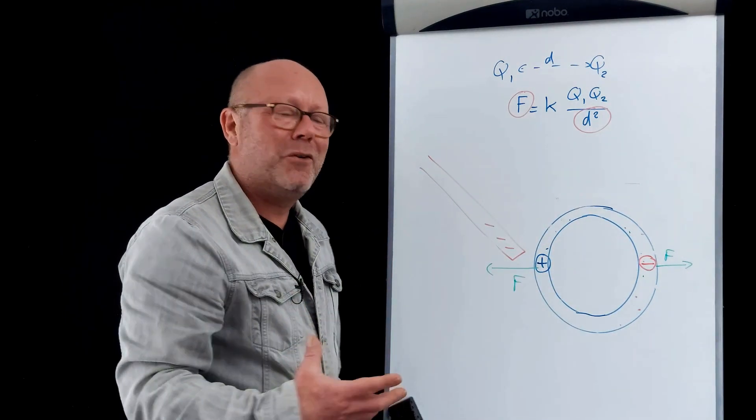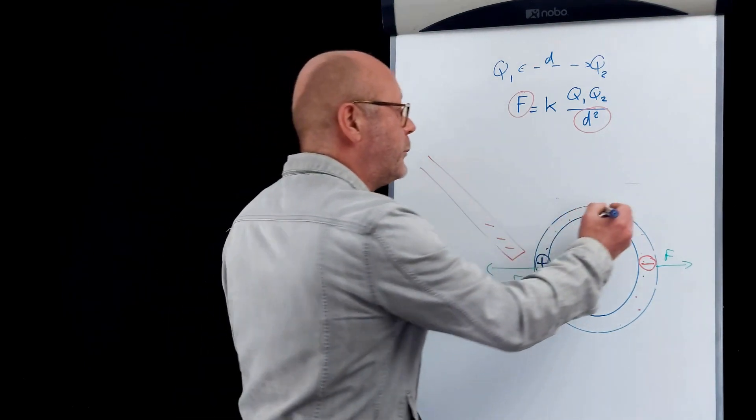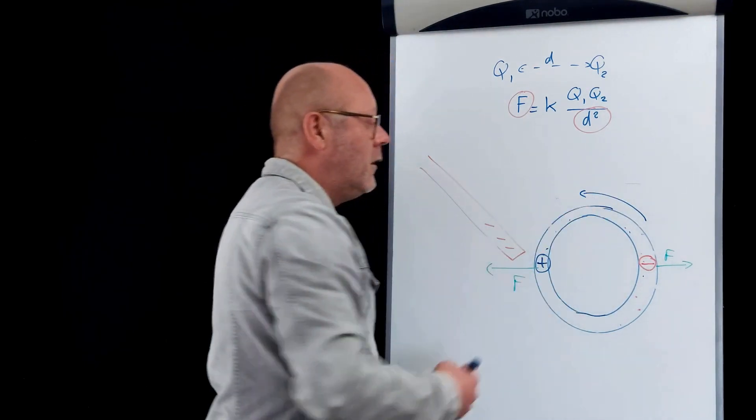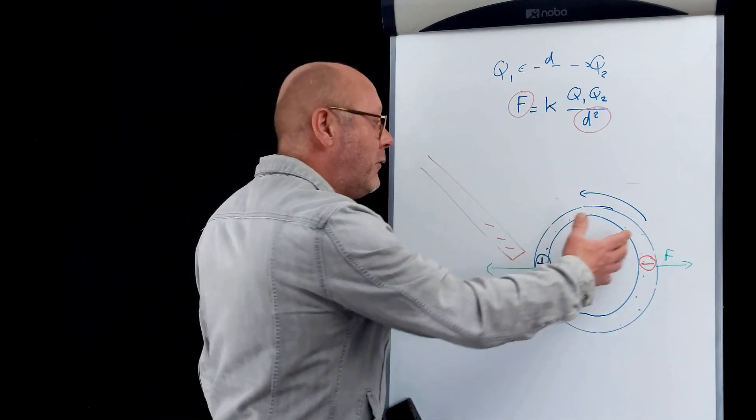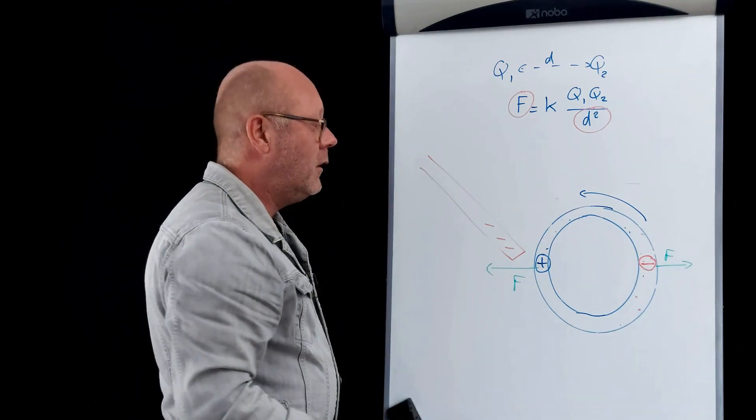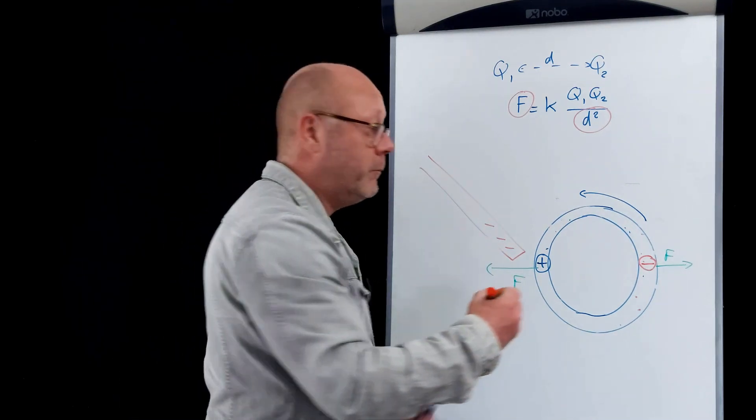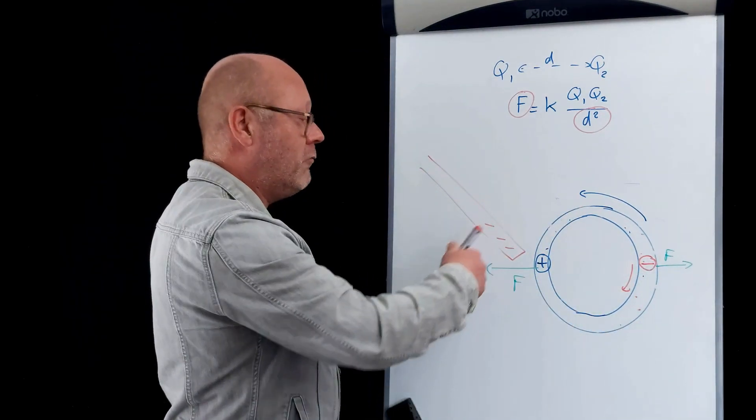You might argue that the can is not moving like this, it's actually rolling. That's not a problem. Because remember that the electrons can move in the metal, therefore they'll try to find the point which is further away from the negatively charged rod, and they'll be rolling too, so that this configuration always stays the same when the rod is around.